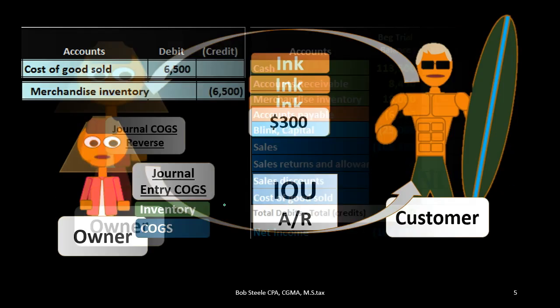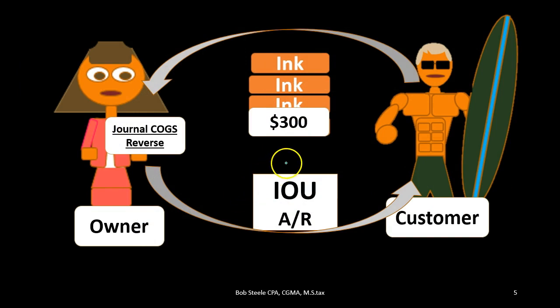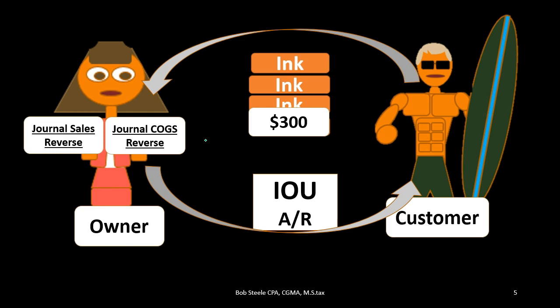If we go down to the return transaction, some of that inventory was now returned. The customer returned $300 worth of the sales price of the inventory. So what would the journal entry be? We're going to have two components and basically reverse what we did last time. The accounts receivable is going to go down — the IOU decreases because we never got payment. They owed us money, never paid us, but gave the merchandise back. Therefore, we just say you don't owe us money anymore; accounts receivable will go down.